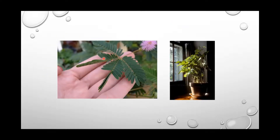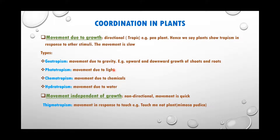When a plant is touched, it is not growing — the leaves are moving without growth. When the plant bends towards sunlight, it is growing towards the light — that is movement with growth. So there are two types of plant movement: one due to growth, and the other independent of growth.